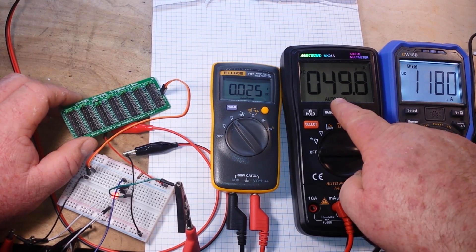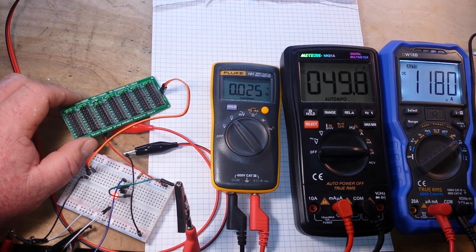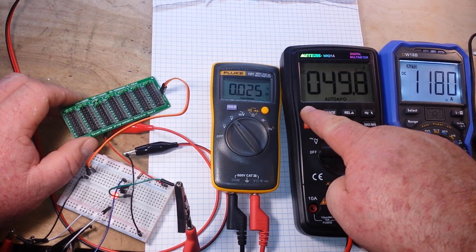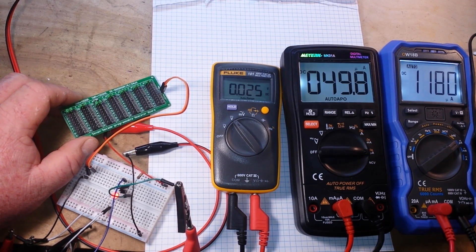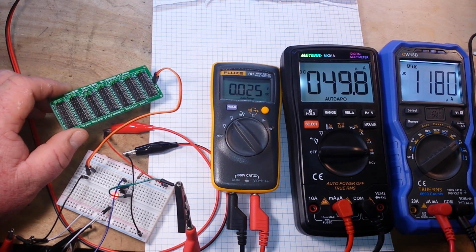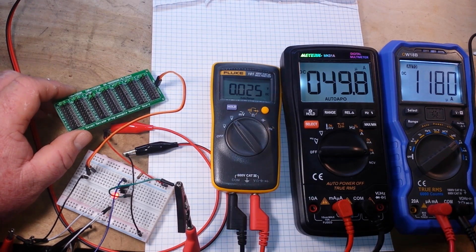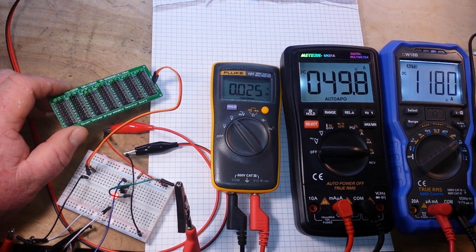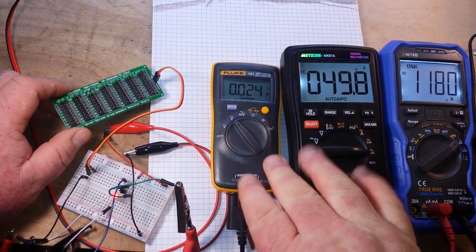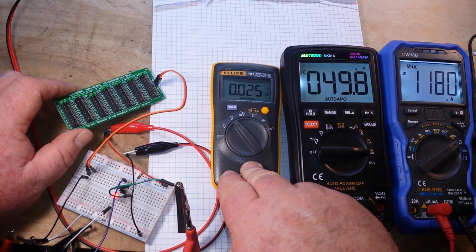Now you see you're seeing 49.8 microamps of base current. Turn the light on so you can see it. 1180 microamps of collector current and 0.025 volt collector-emitter voltage.